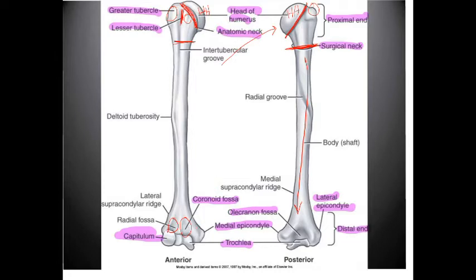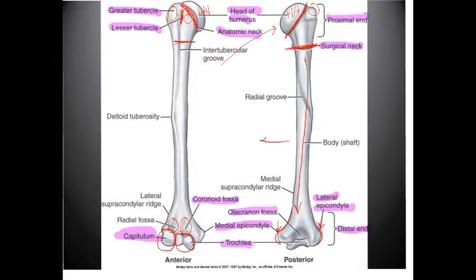The distal humerus also features the trochlea and capitulum for articulation with the radius and ulna. Projecting outward on both sides are the medial and lateral epicondyles, which provide attachment sites for tendons and ligaments.